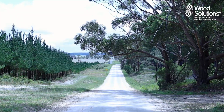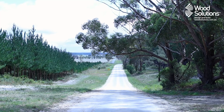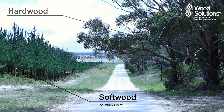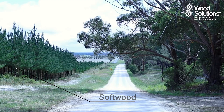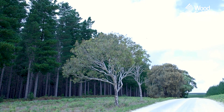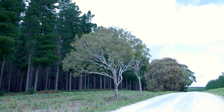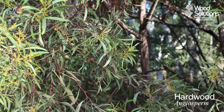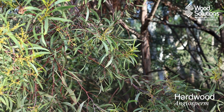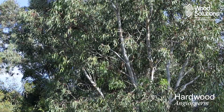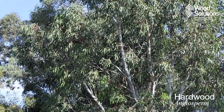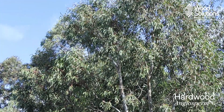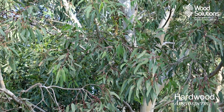Tree species can be divided into two categories: hardwoods and softwoods. There are some general giveaways that may suggest the type of tree you're looking at. For example, hardwoods are typically broad-leaved trees and may feature fruits and flowers. Good examples of these include gum trees, mountain ash, and of course any fruit trees you may have in your garden.